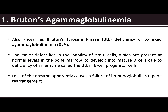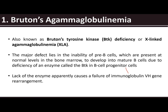Lack of the enzyme apparently causes a failure of immunoglobulin VH gene rearrangement — there is a problem with the variable heavy chain gene rearrangement. Due to the absence of the BTK enzyme, there is a failure of immunoglobulin variable heavy chain rearrangement.